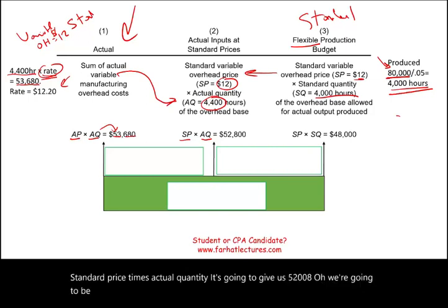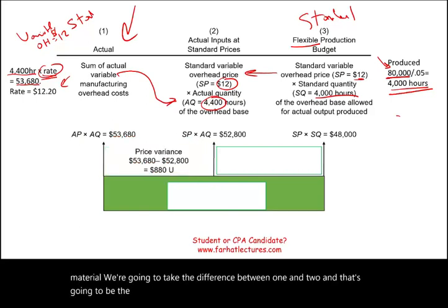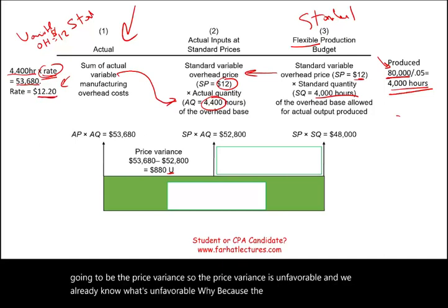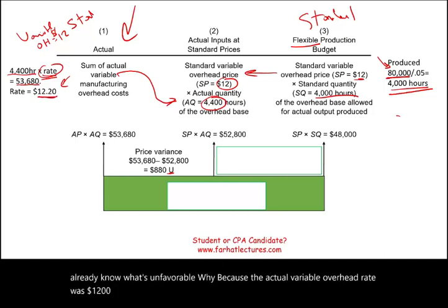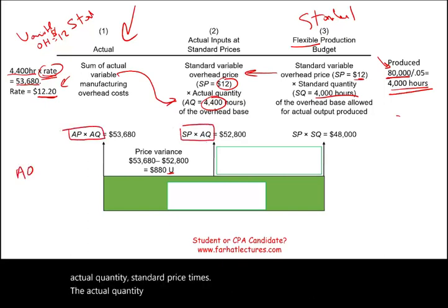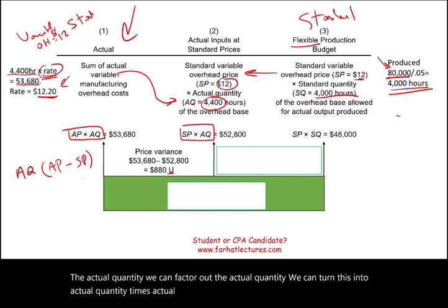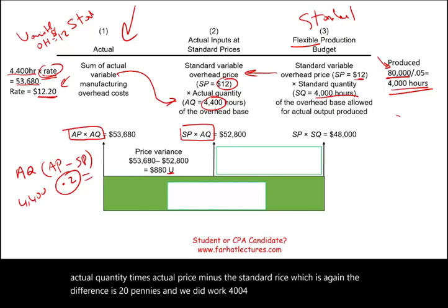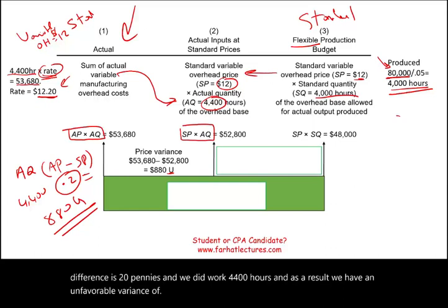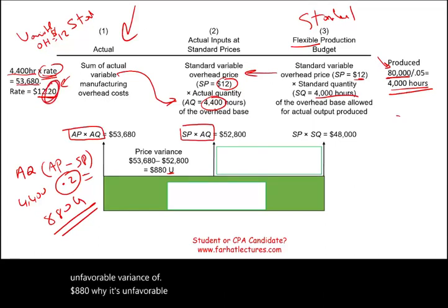We're going to use the same strategy as for direct labor and direct material variance. The difference between column one and column two is the spending or price variance. The price variance is unfavorable — we already know that because the actual variable overhead rate was $12.20. Using the formula: actual quantity times (actual price minus standard price) = 4,400 hours times $0.20 = an unfavorable variance of $880.